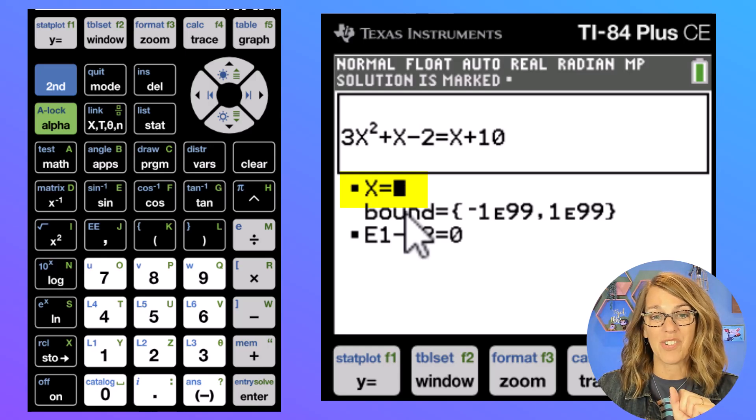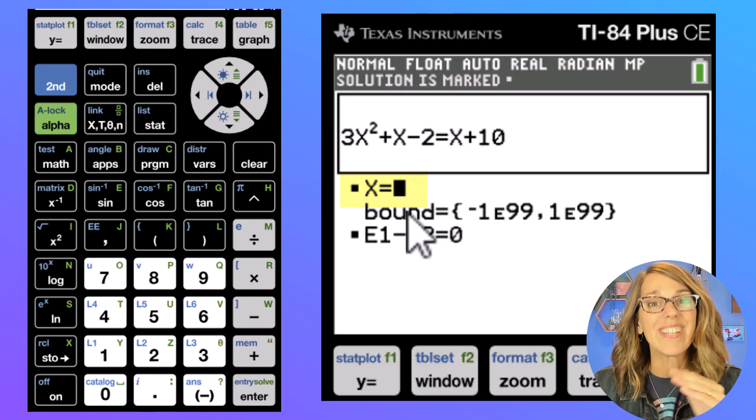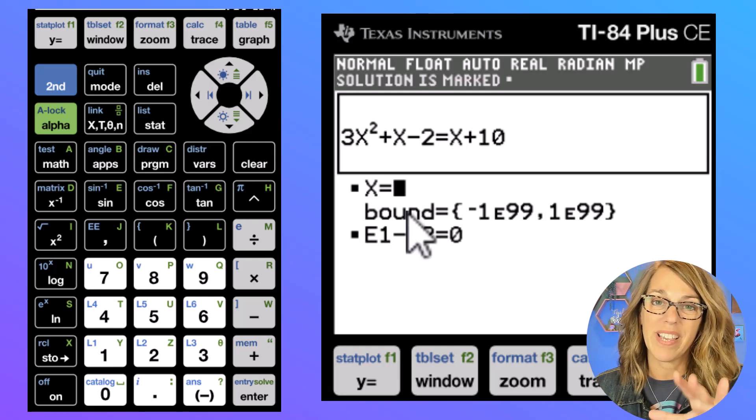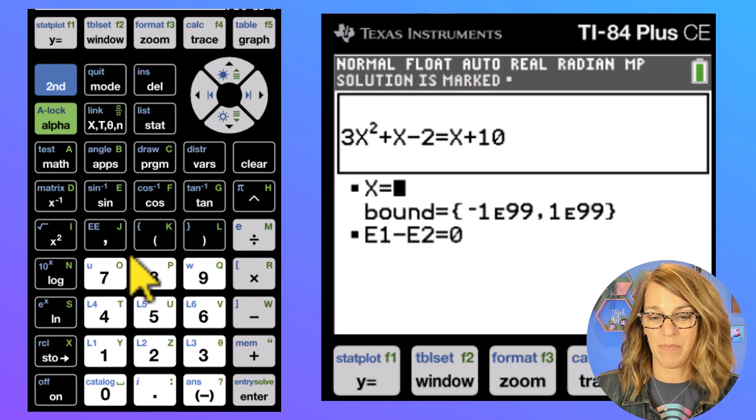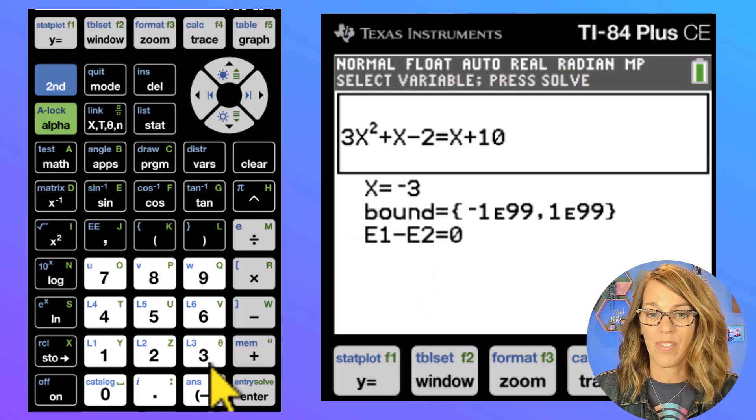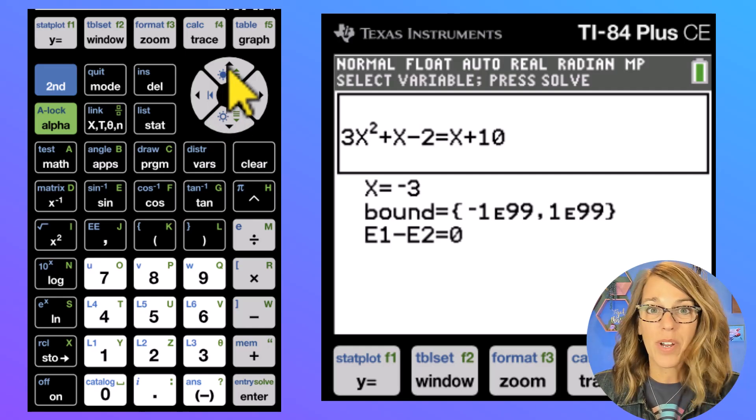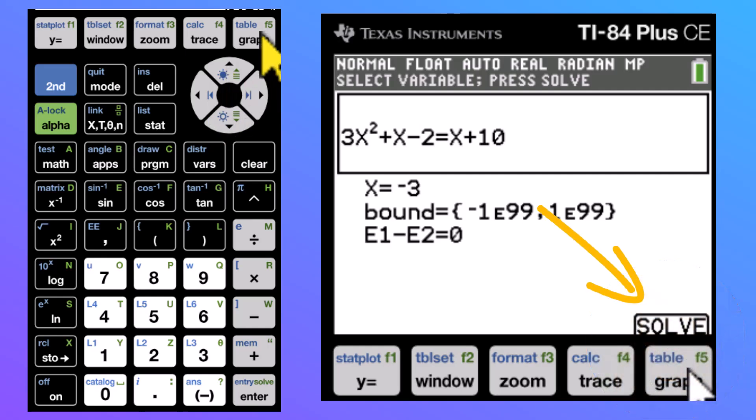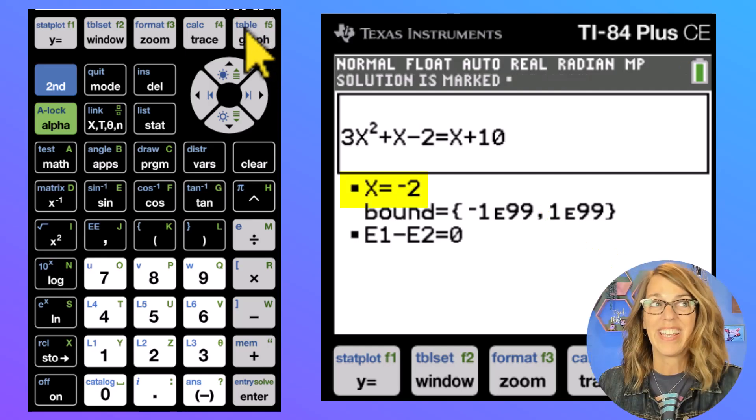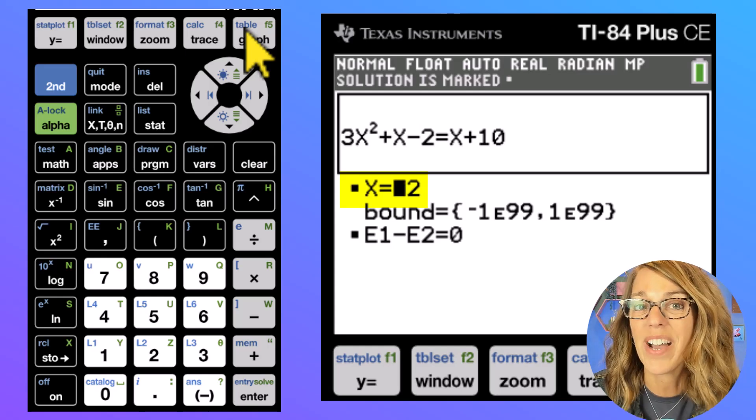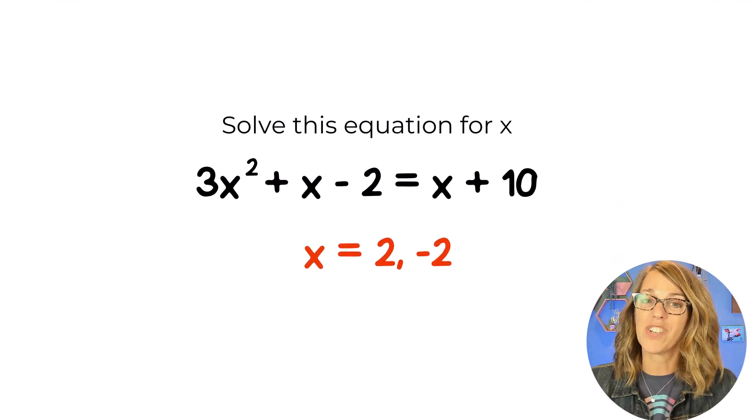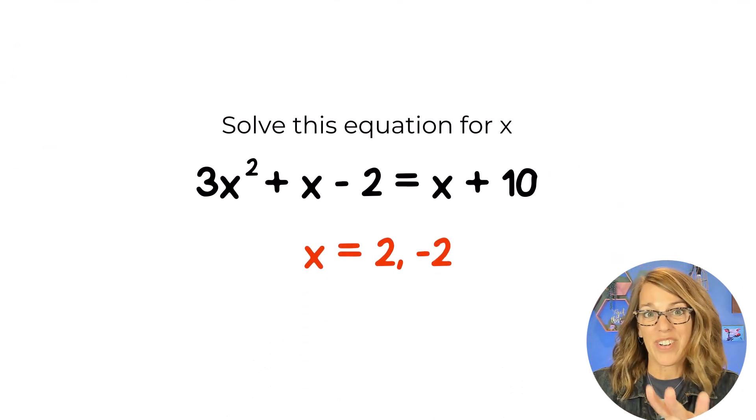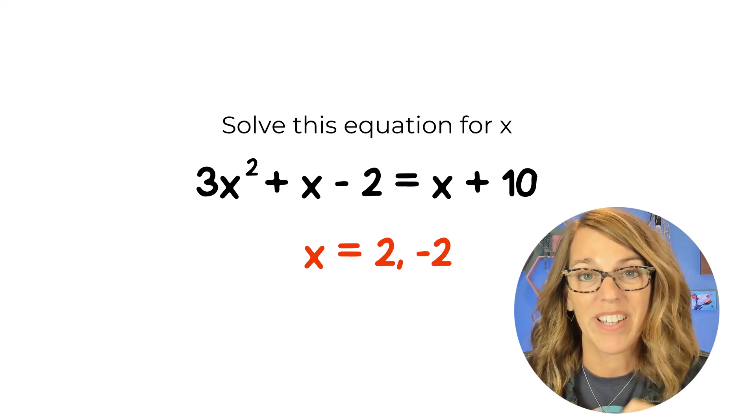But I know that there's a second solution. Let's do this again by typing in another guess. I'm going to type in a negative number this time. So I'm just totally guessing negative 3. I'm not going to worry about the bound. So I'm ready to click solve. So let's click that graph button for solve. And it did give me another solution. If it happened to give you 2 again, go ahead and just try a different guess. But I've got my degree 2 equation and my two solutions. No factoring, no quadratic formula necessary.